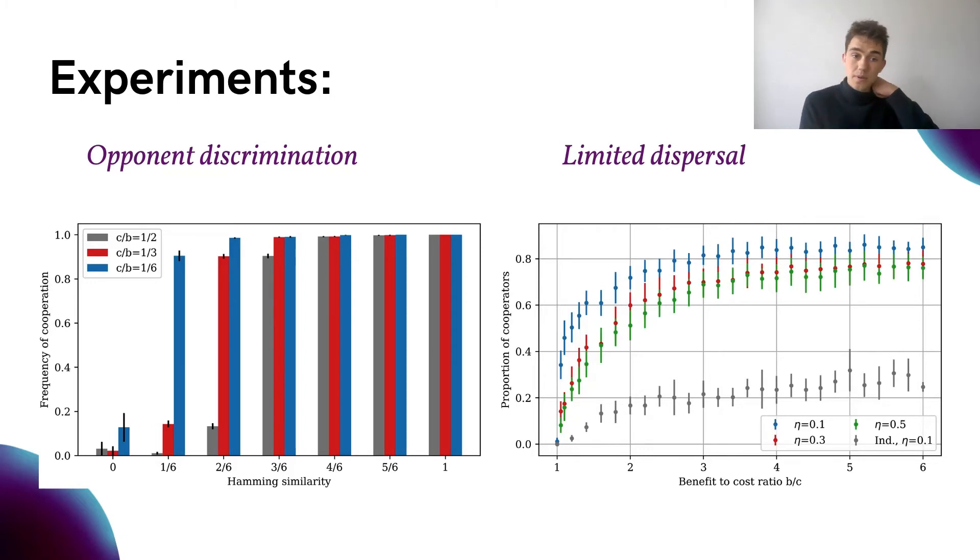After training the agents in our network, we can see from the left figure that they spontaneously learn to cooperate with other agents that have a Hamming similarity with them that is larger or equal than the cost of cooperation divided by the benefit of cooperation, which coincides very nicely with Hamilton's rule from biology.